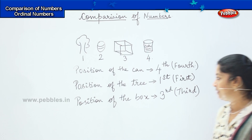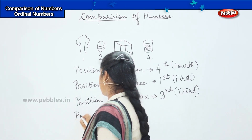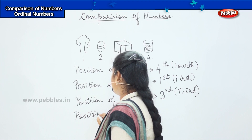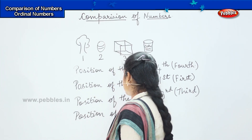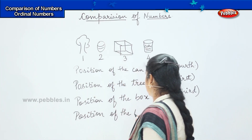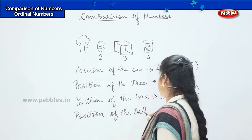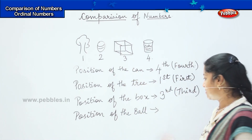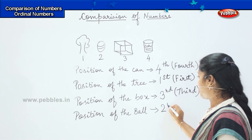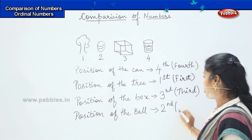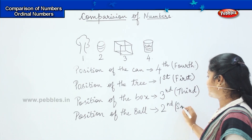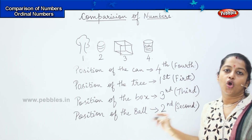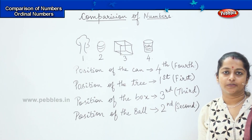Can you tell me the position of the ball in the given picture? It is in the second place. I will write 2nd — that is, two, n, d — or we say it as 'second.' The ball is placed in the second position.